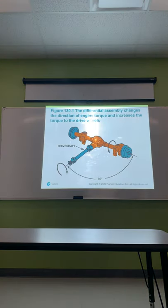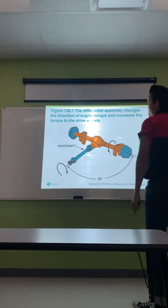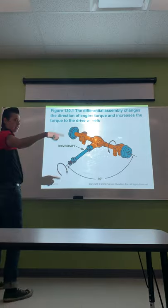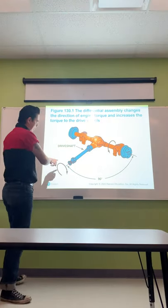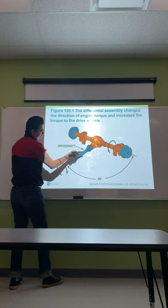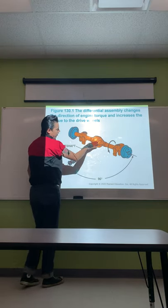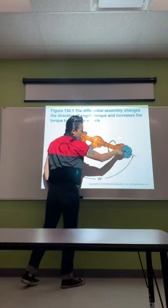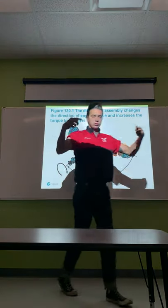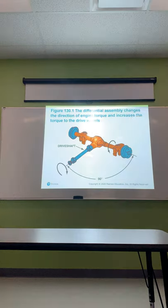The differential assembly changes the direction of the engine torque and increases the torque at the drive wheels. As it comes out of the transmission, we have rotational energy spinning the drive shaft. When it goes through the differential, it makes a 90-degree turn, and now it starts to rotate each side of the axle flanges, which are attached to wheels, sending power to the ground.